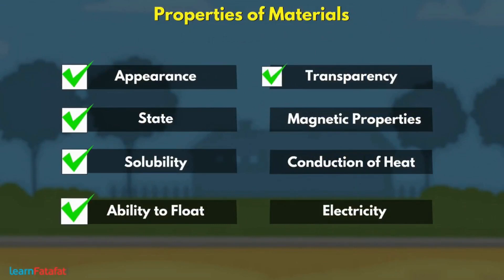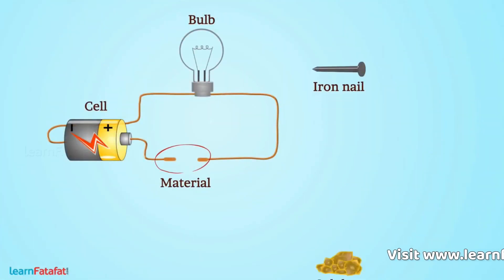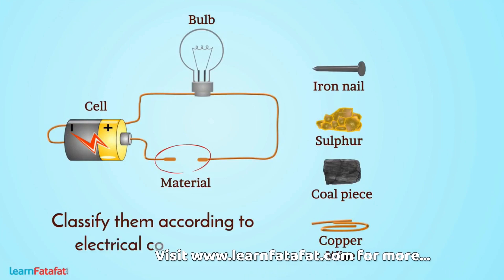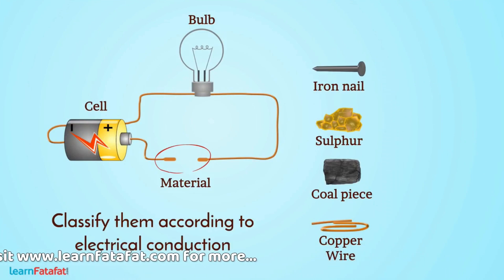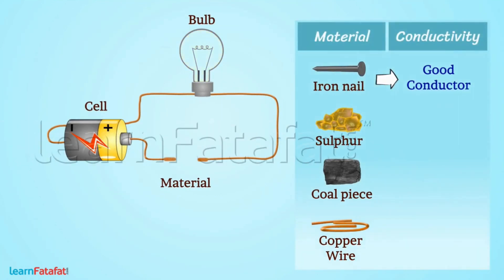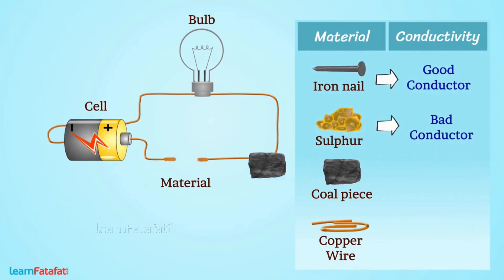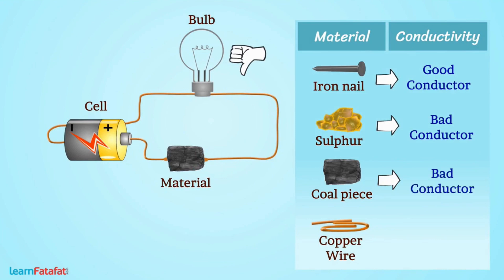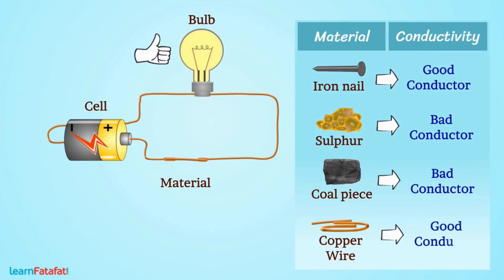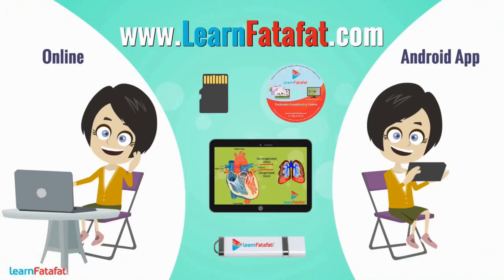We can use any property to classify a material. For example, here are some materials and we need to classify them according to electrical conduction. Can we do that? Yes, the answer is like this. I hope you have understood this topic very well. For more videos, log on to the website.